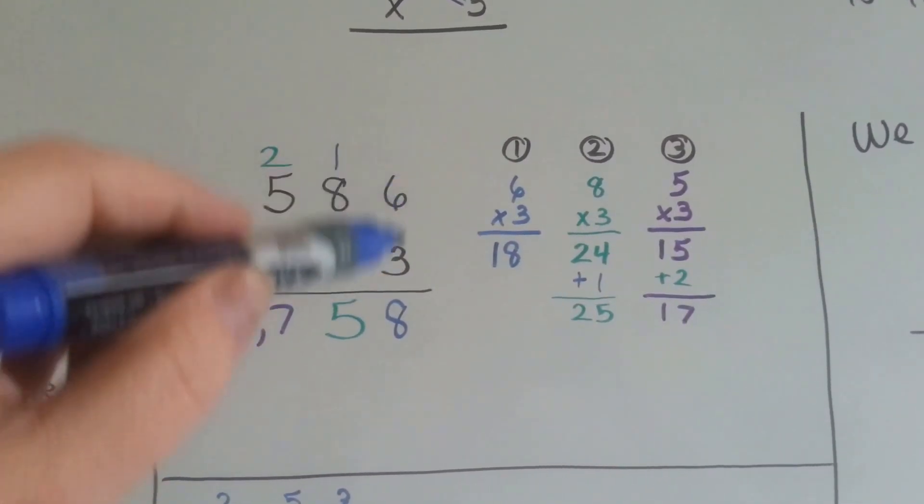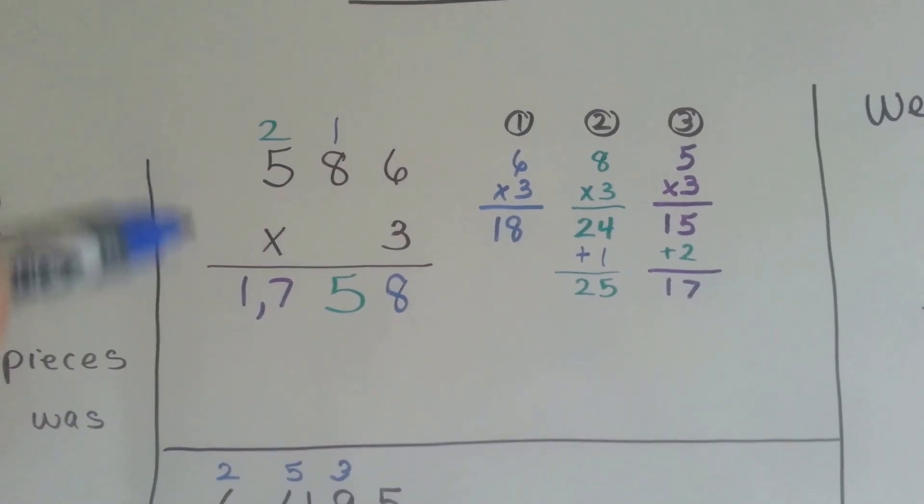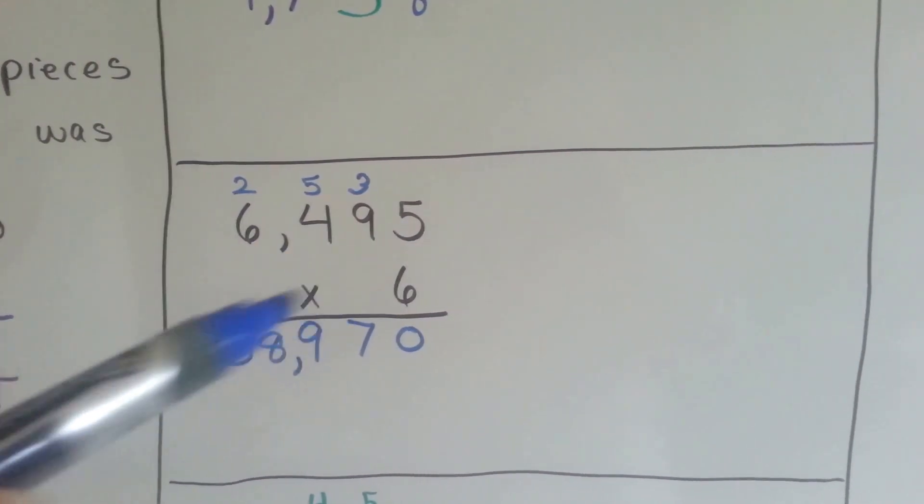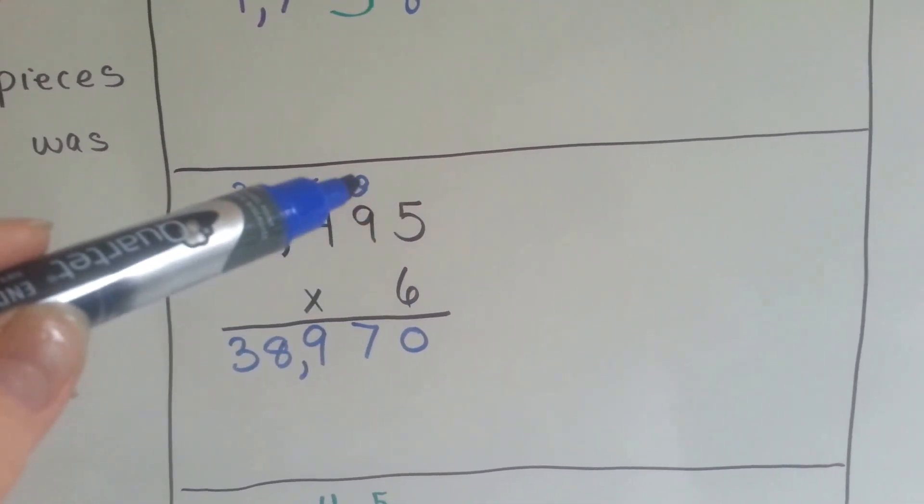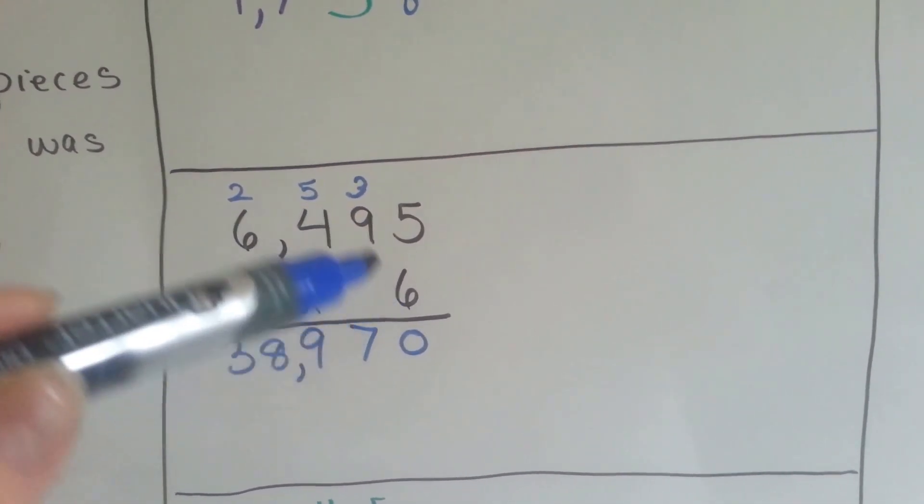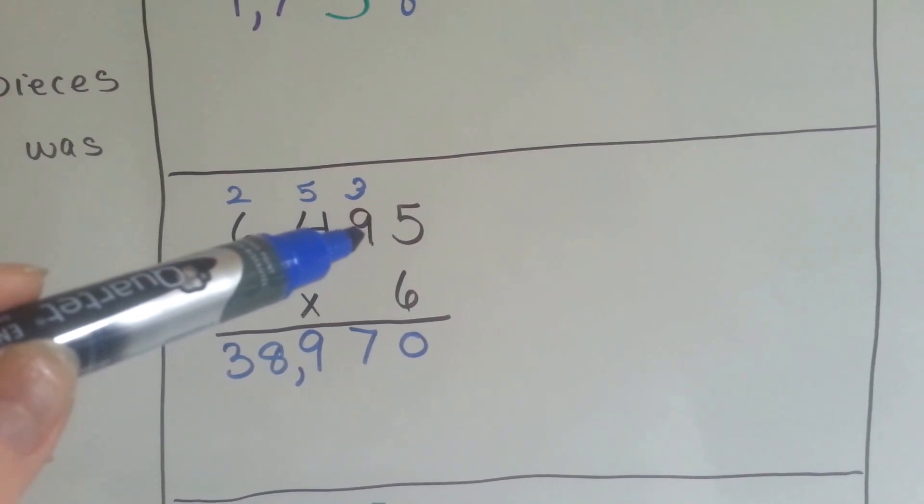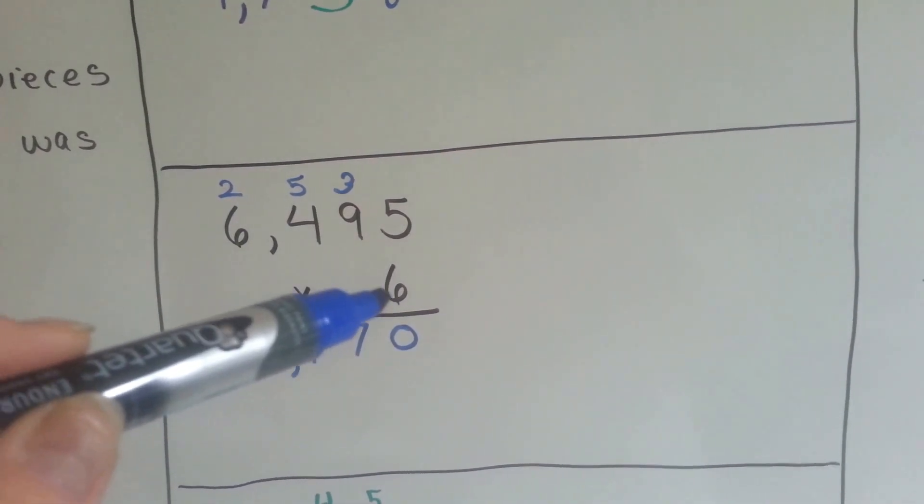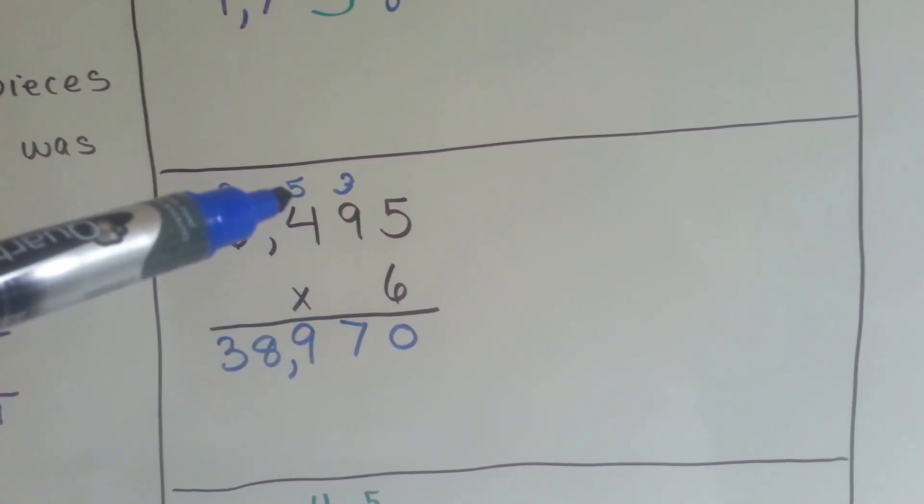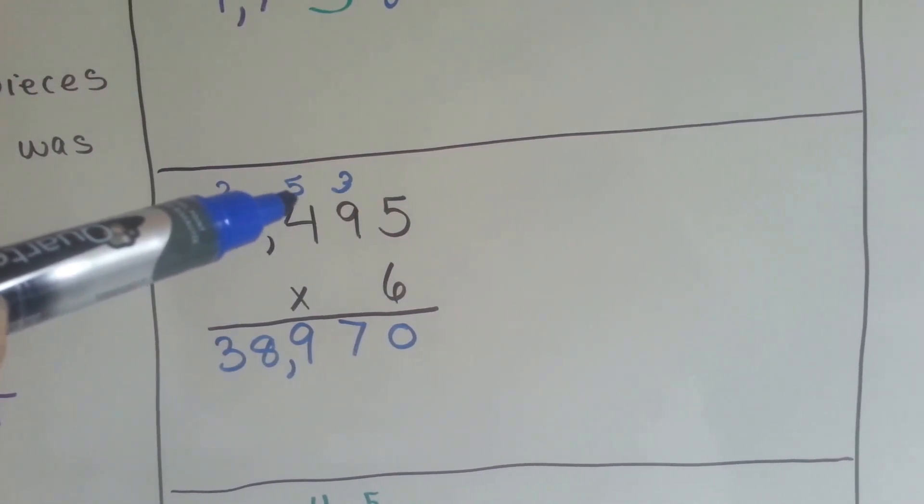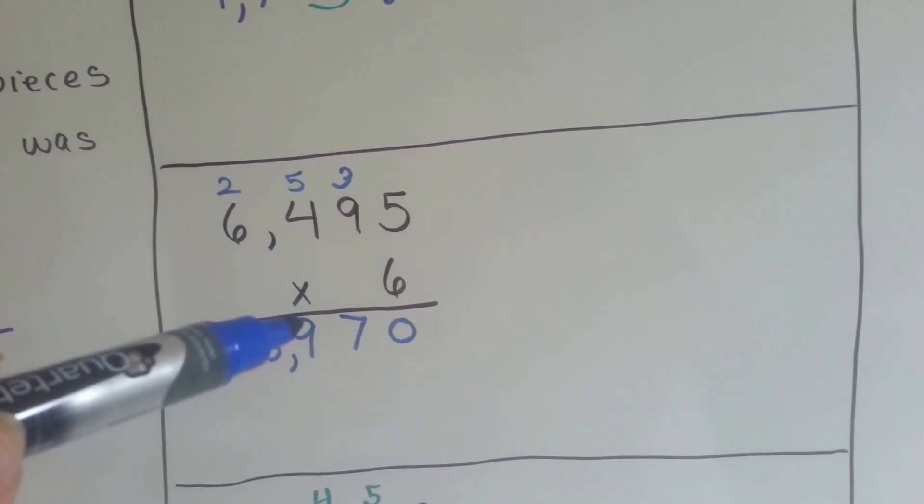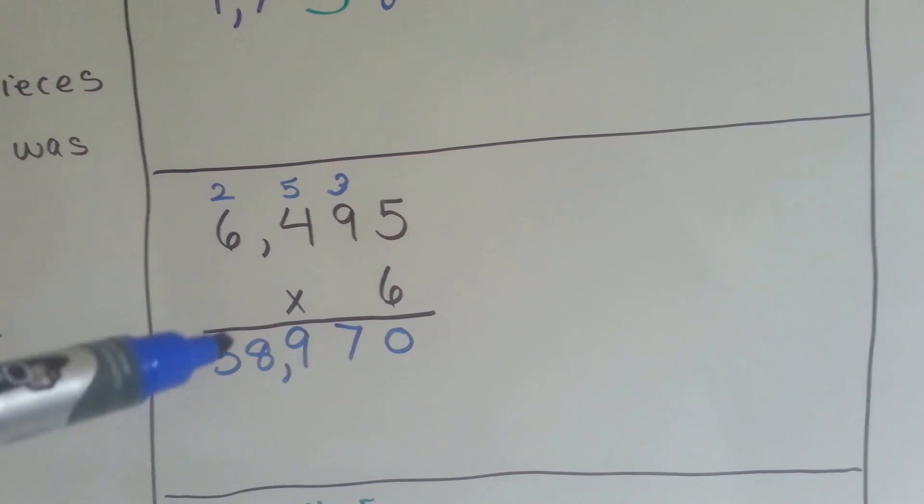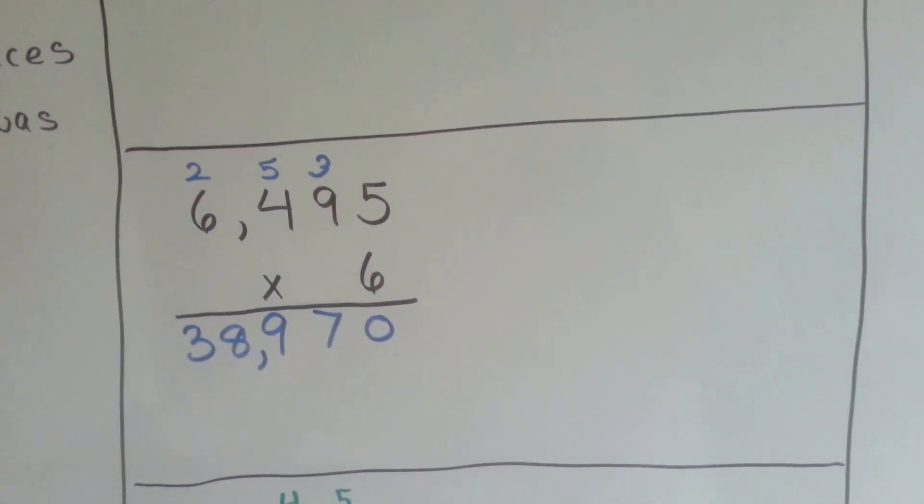All we have to remember is to go ones, tens, hundreds, and thousands if there's thousands. So let's look at this one: 6,495 times 6. 6 times 5 is 30. We put the 3 up here and carried it over to the tens column and put our 0 down. 6 times 9 is 54, plus 3 is 57. We put the 5 here and the 7 down here. 6 times 4 is 24, plus 5 is 29. We carry the 2 and put the 9 down. Now we do 6 times 6, which is 36. We add the 2 and we get 38. And our answer is 38,970.